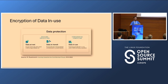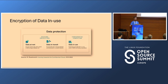This is a slide that folks in this space have probably seen a lot. Essentially, we have three pillars: data at rest, data in transit, and data in use. Data at rest is data encrypted in your database. Data in transit covers TLS connections between services. Both of those are well-established in practice today. What remains is data in use — a harder problem.